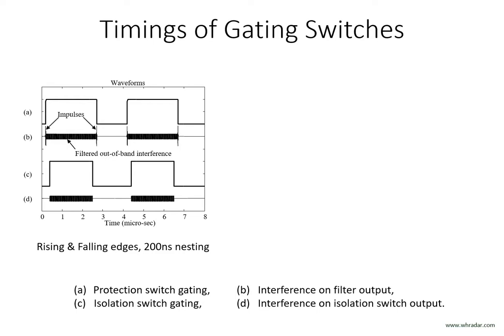Waveform C illustrates the isolation switch control with 200 ns nesting at both ends. That is, the isolation switch closes 200 ns after the protection switch closes, and therefore 200 ns after the start of the rising edge impulse. And it opens again 200 ns before the falling edge impulses. The isolation switch therefore gates out all the impulses, and therefore the in-band interference, as shown in waveform D. The only interference that now remains is the out-of-band carrier component, which has been attenuated by the filter, and pulse modulated by the isolation switch, plus any leakage of the impulses due to the finite isolation of the isolation switch.